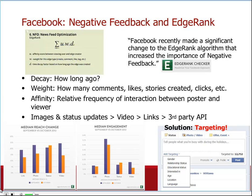As a general rule of thumb: pictures perform better, statuses succeed, links are lackluster. EdgeRank Checker has done some more detailed research, but one important conclusion for any community manager is that if you share content with a poor impression-to-interaction ratio, you're decreasing the affinity score for all those users that didn't interact with your content. An excellent solution to better manage your attention stockpiles — effectively your marketing budget — is to take advantage of Facebook's news feed targeting feature, which provides filtering options to help you hit your audience.